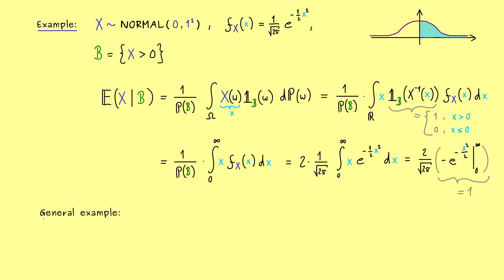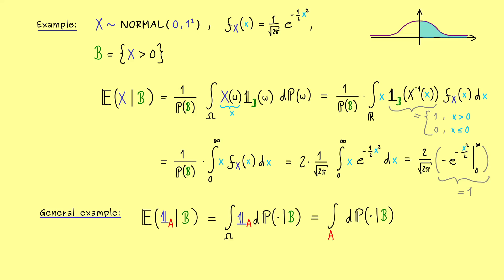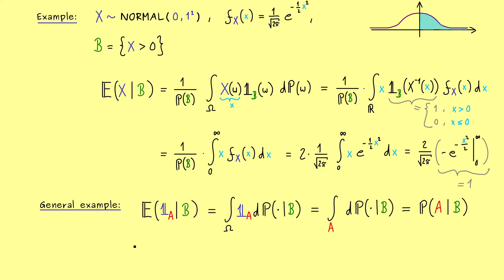Now let me show a very general abstract example. We want to find the conditional expectation of a random variable given by the indicator function of a set A. Using our formula, the indicator function of A just changes the domain of integration, so we integrate over the set A with the constant function 1 inside. This means we simply apply our conditional probability measure to the set A, and we get out the original conditional probability P(A|B). So the conditional probability can be rewritten as a conditional expectation — keep that in mind whenever you see conditional expectations of indicator functions.